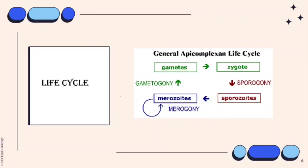Sporozoites are an invasive form that will invade cells and develop into forms that undergo another asexual replication known as merogony. Merogony and the resulting merozoites are known by many different names depending on the species. In contrast to sporogony, in which there is generally only one round of replication, quite often there are multiple rounds of merogony. The merozoites, which are also invasive forms, can reinvade cells and initiate another round of merogony.